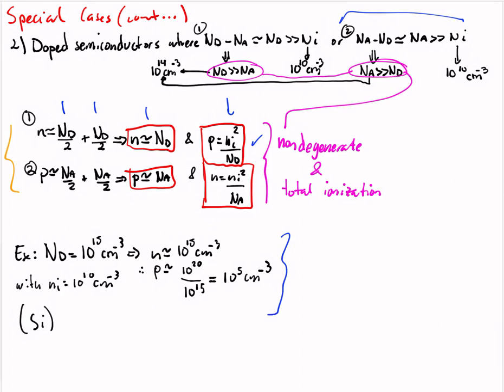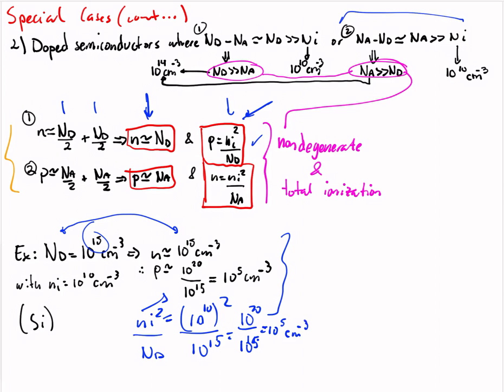What we just did can also be done with this other example. If ND is 10^15 and ni is 10^10 again, ND will equal n. And using the formula p = ni²/n, p will be ni squared which is 10^20 divided by ND which is 10^15. That will be 10^5. Of course the units are centimeters to the minus 3. So this is another special case.